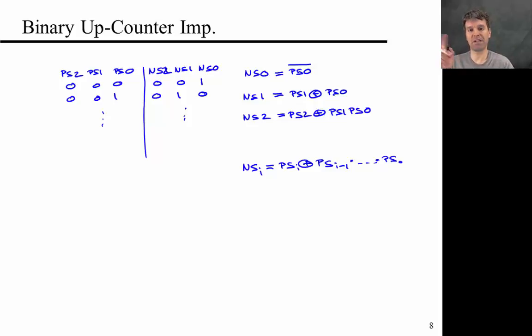It's true because the lowest order bit just flips from one number to the next one. You can maybe also see that next state 1 is the XOR of ps1 and ps0. It becomes a little less obvious as you go to higher order bits, but it's fairly intuitive.